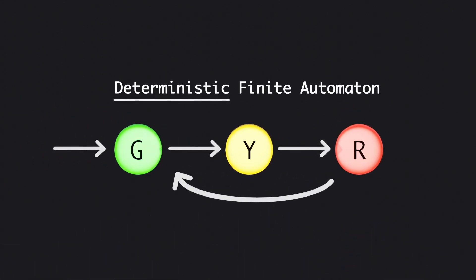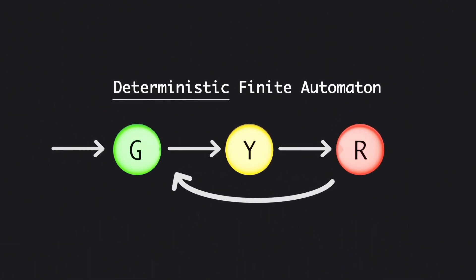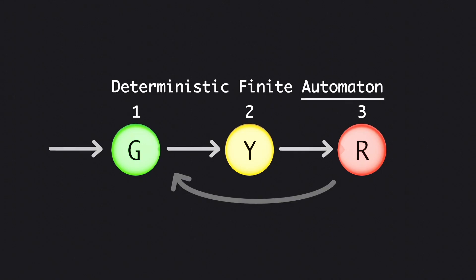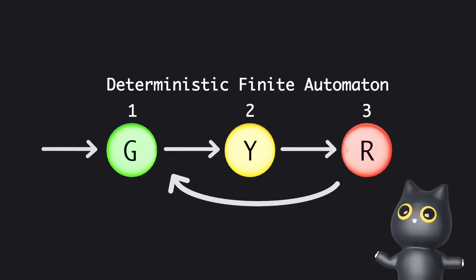Deterministic meaning it transitions from one state to another in a predictable way. Finite because there are only three countable states. And automata meaning a self-operating machine. Simple right? Let's go a step further and expand on this idea.